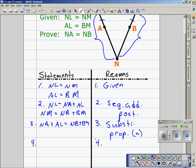And another substitution, since we are given that AL is equal to BM, we're going to replace this BM with an AL so that we get the measure of NA plus the measure of AL is equal to NB plus the measure of AL.